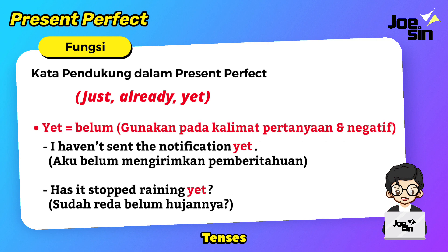Yang ketiga, yet — belum. Kata yet ini hanya digunakan untuk kalimat negatif dan juga pertanyaan. Contohnya: I haven't sent the notification yet — aku belum mengirimkan pemberitahuannya. Ada kata have, lalu not, lalu sent, dan yet di akhir sebagai penanda. Contoh pertanyaan: has it stopped raining yet? — sudah reda belum hujannya? Ada kata has, subjek it, lalu kata kerja stopped.